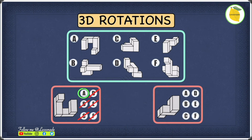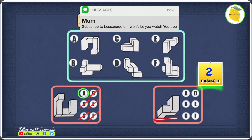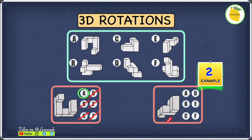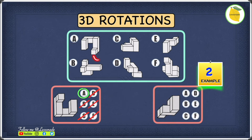Now let's look at the second example. With this 3D figure, we have two cuboids — one here and another here — but we also have two cubes. So we have two cuboids and two cubes. If we find an option that does not contain two cubes and two cuboids, we cross it off. In A, you can straight away see that we only have one cube, which is not the correct number, so cross out A.